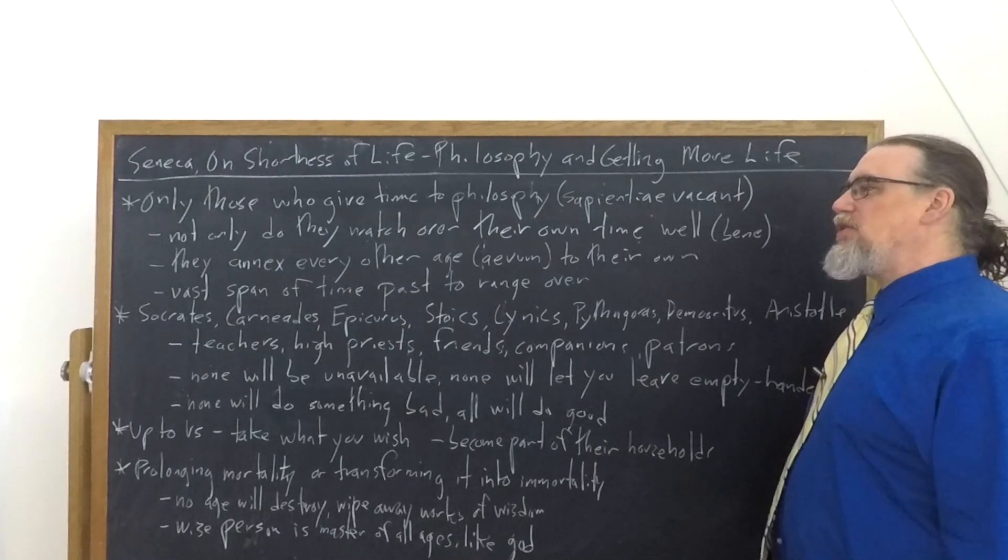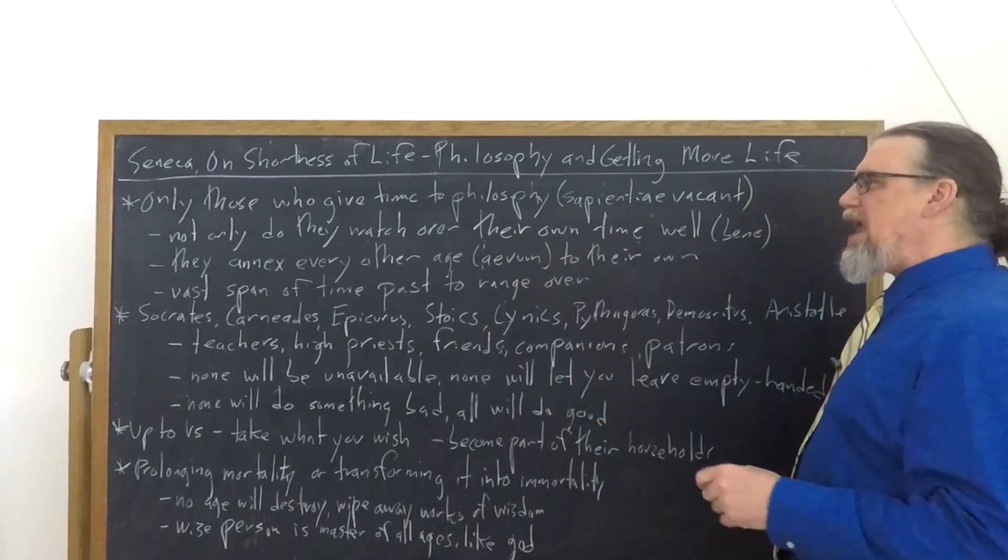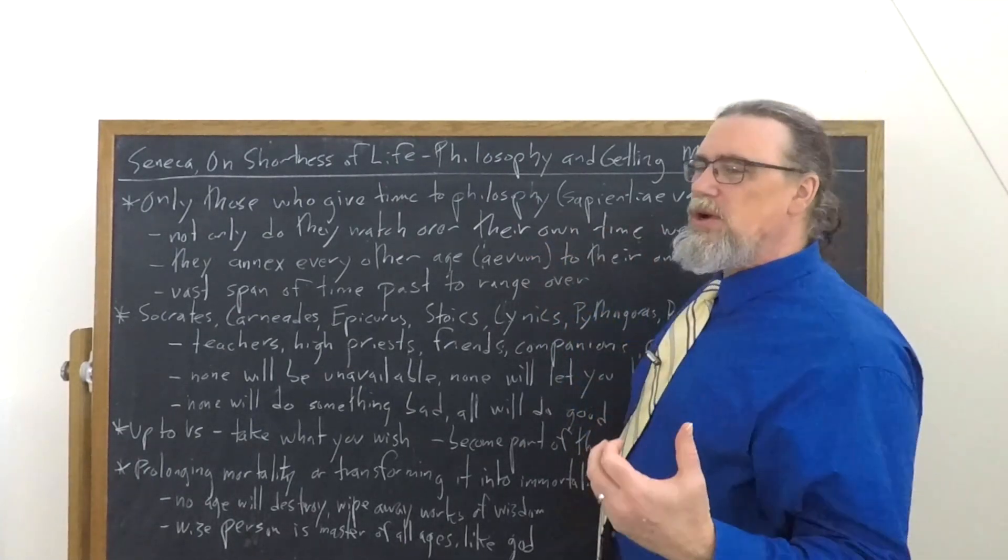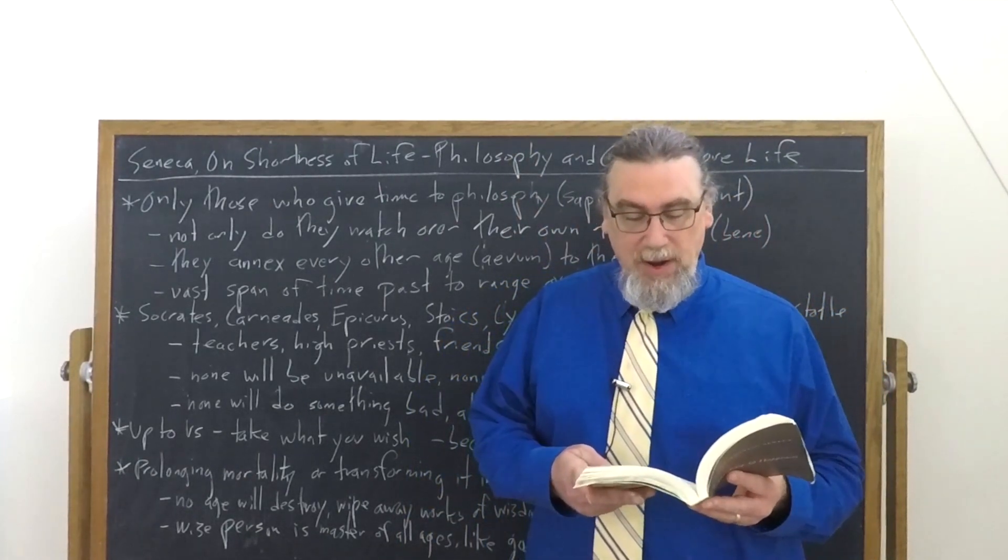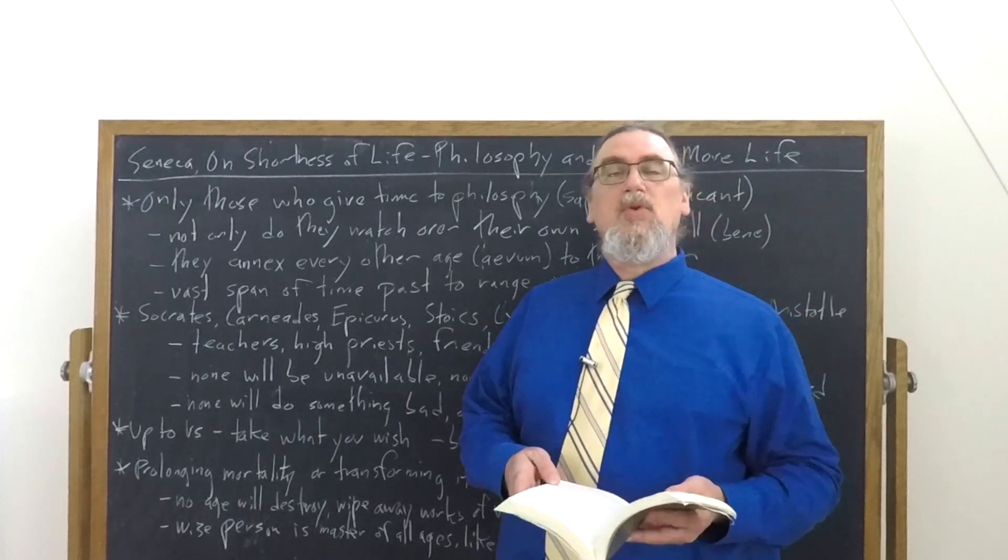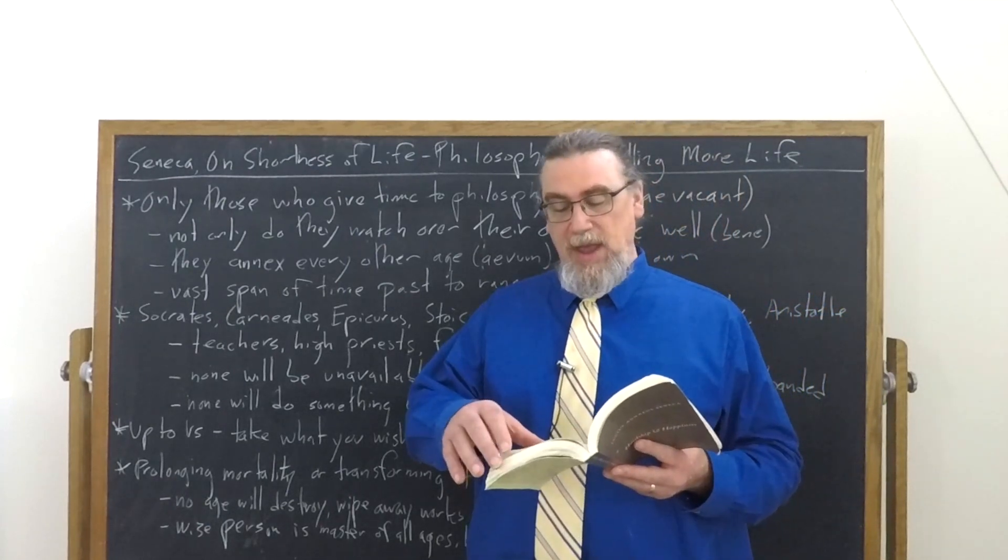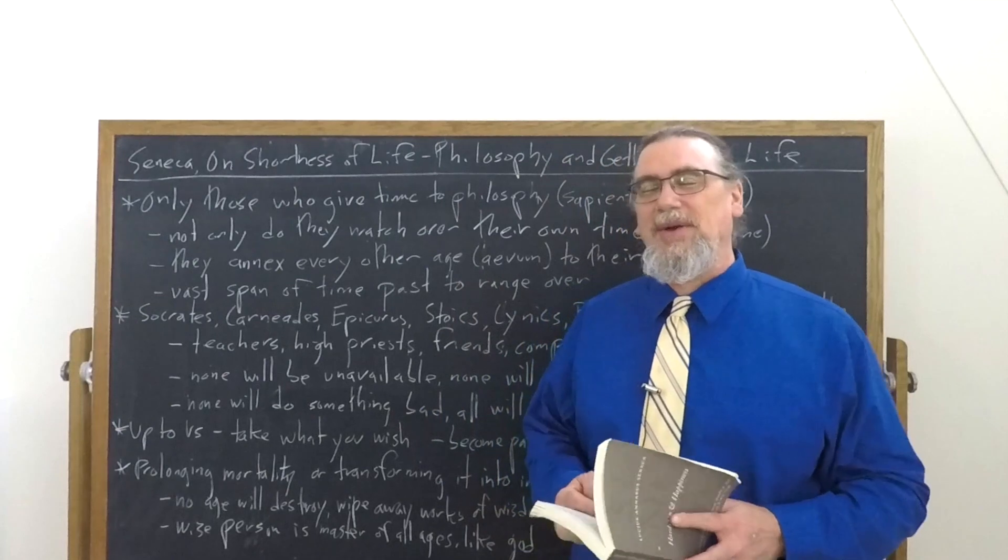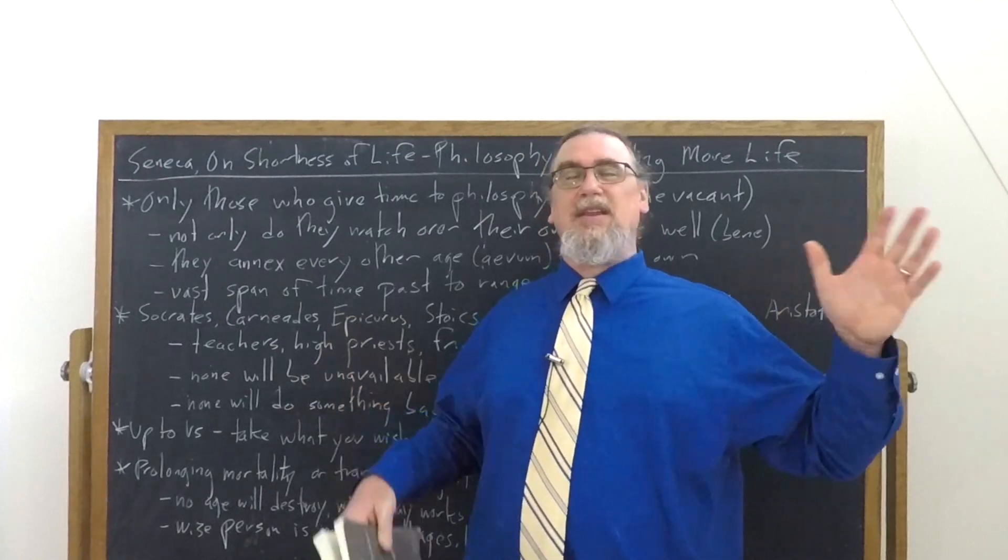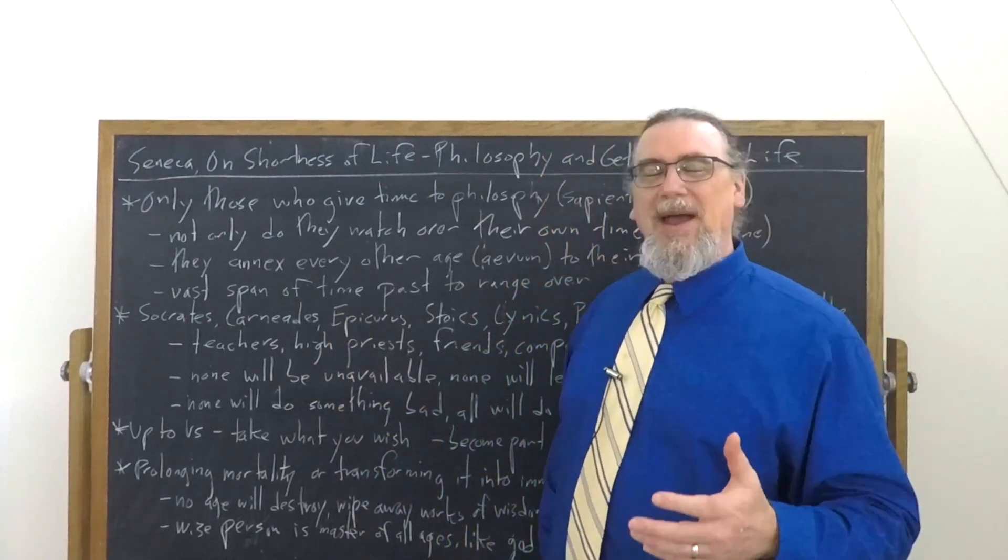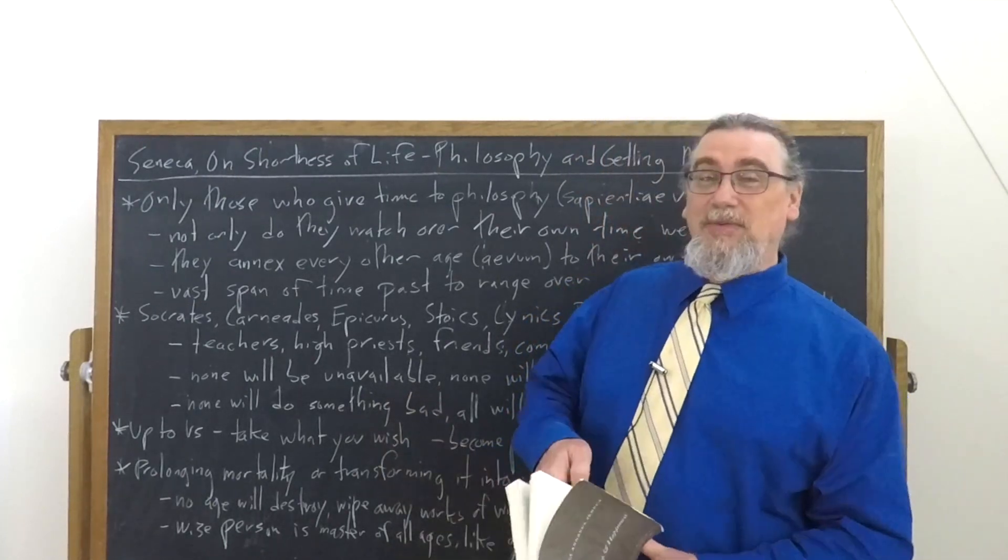And he says that what they do is they, and next, they add literally every other age, every other aivum to their own by studying philosophy. It's not only their own lifetime. And he says, unless we prove most ungrateful, these most distinguished founders of hallowed thoughts came into being for us. Now that's an interesting thought too, isn't it? Socrates, you know, in the present, we would say, well, he didn't know who we were going to be, but he left behind a legacy as did so many other philosophers, according to Seneca. That is our inheritance. It's for us.